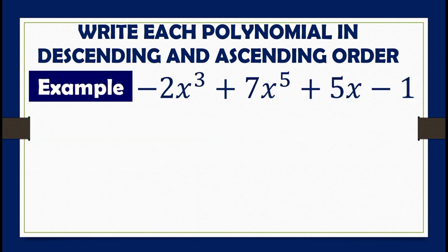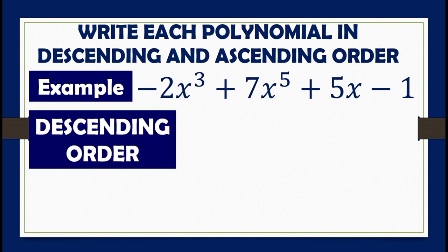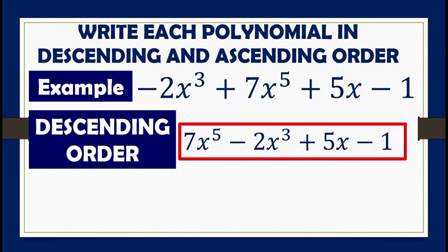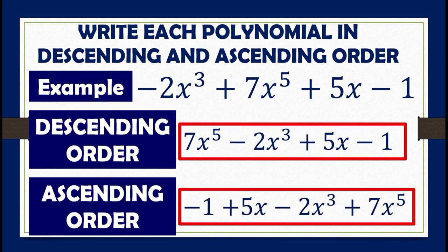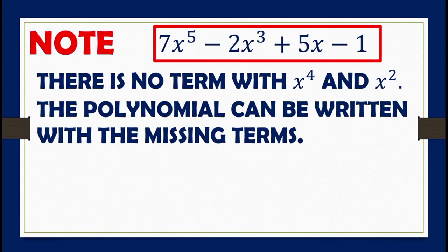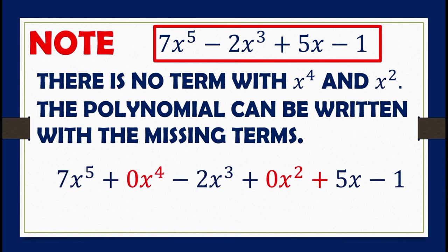Another example: negative 2x cubed plus 7x to the 5th plus 5x minus 1. The descending order is 7x to the 5th minus 2x cubed plus 5x minus 1, and the ascending order is negative 1 plus 5x minus 2x cubed plus 7x to the 5th. Remember to affix the sign present on each term. Also, we can write missing terms with a coefficient of 0: 7x to the 5th plus 0x to the 4th minus 2x cubed plus 0x squared plus 5x minus 1.